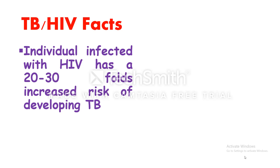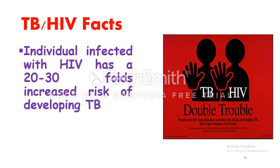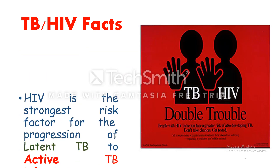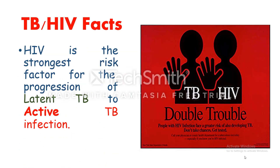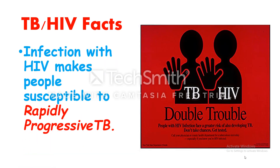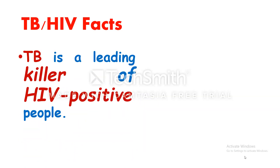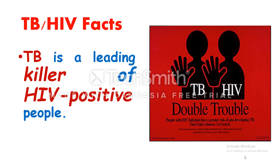An individual infected with HIV has a 20 to 30-fold increased risk of developing tuberculosis. HIV is the strongest risk factor for the progression of a latent TB infection to active tuberculosis. Infection with HIV makes people susceptible to the rapidly progressive form of tuberculosis, which is almost always fatal.